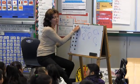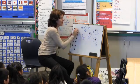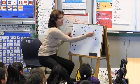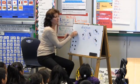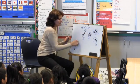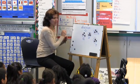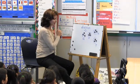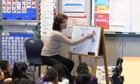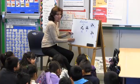Here we go: one for Billy, one for Rudy, one for Justin, one for me. One for Billy, one for Rudy, one for Justin, one for me. One for Billy, one for Rudy, one for Justin, one for me. How many do I have? Three. How many does Billy have? Three. How many does Rudy have? Three. How many does Justin have? Three.